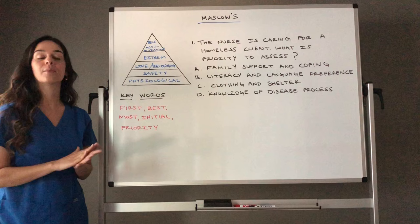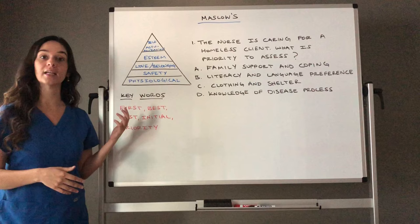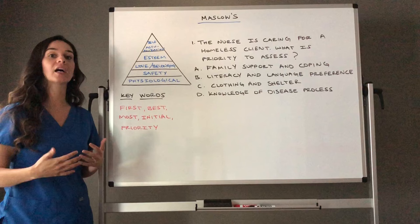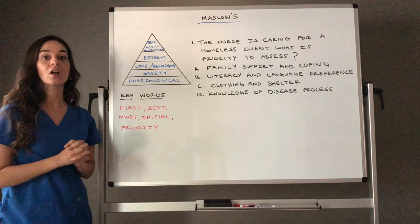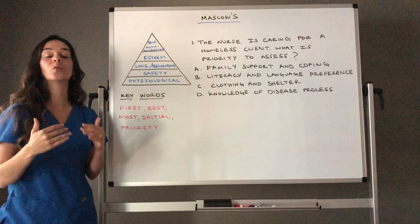Maslow's is a theorist that believes humans are motivated to reach certain needs before other needs. He stated that at the bottom of the pyramid, humans need to meet physiological needs such as the need to breathe, food and water, and shelter — over the need for safety, love and belonging, self-esteem, and self-actualization. We need to meet needs at the lower portions of the pyramid before meeting those at the top.